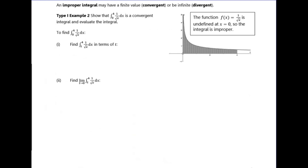Example two asks us to show that the integral of 1 over root x is a convergent integral and to evaluate it. A sketch of the graph is always a good idea. It includes x equals zero, which is an asymptote — that's our problem. But just because there's an asymptote doesn't mean it's divergent. The way to deal with this is to replace the discontinuous limit with a t. Since there's an asymptote at x equals zero, I replace the lower limit of zero with t.